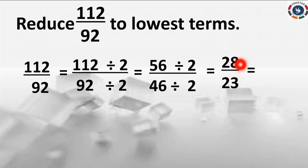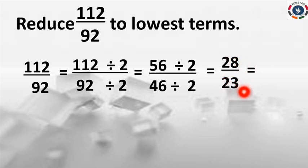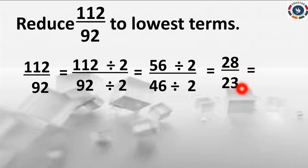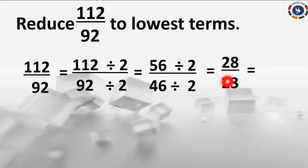So 28 is an even number as well as a composite number, and 23 is a prime number. So we can't divide by any other number. You can stop here. This is an improper fraction because the numerator is greater than the denominator. So we are going to convert this improper fraction into mixed fraction. If you get a proper fraction, you can stop.